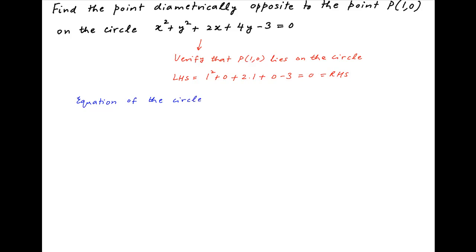Now the equation of the circle can be written as x square plus 2x plus y square plus 4y equals 3. Adding 1 and 4 on the left-hand side and adding 5 on the right-hand side, the left-hand side becomes the sum of 2 perfect squares: (x+1) whole square and (y+2) whole square, and this is equal to the right-hand side which can be written as (2√2) square.